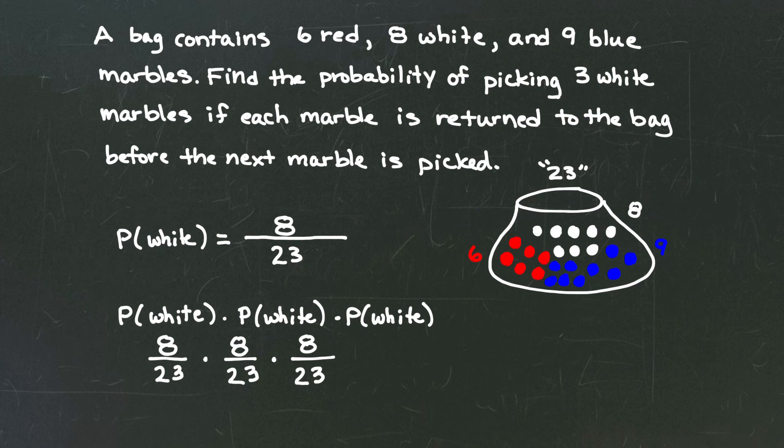To get the final probability what do we have to do? We have to use some multiplication so we're going to multiply eight times eight times eight in the numerator and so I'm going to pull out my calculator to do that.